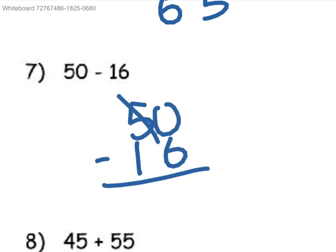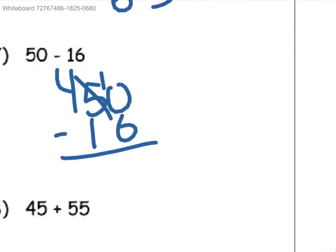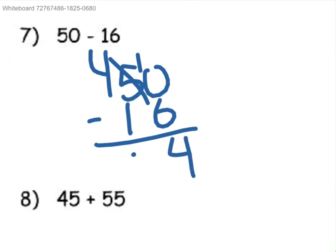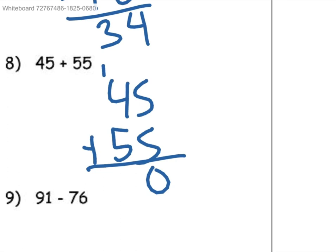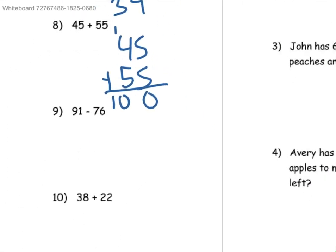50 minus 16. Turn this into a 4, put the 1 over here. 10 minus 6 is equal to 4. And then 4 minus 1 is equal to 3. 45 plus 55. 5 plus 5 is equal to 10, carry the 1. 4 plus 1 is 5, 5 plus 5 is 10. So 45 plus 55 is equal to 100.